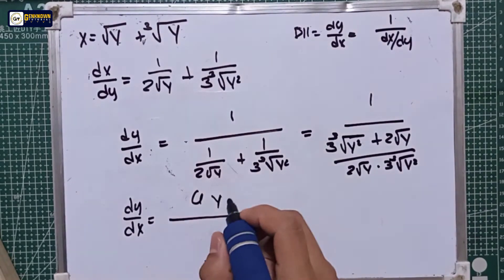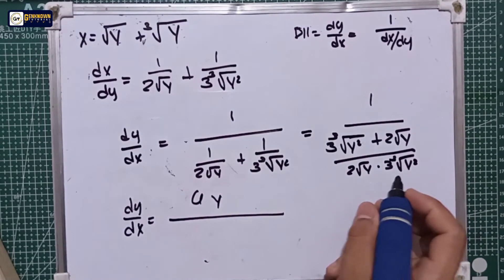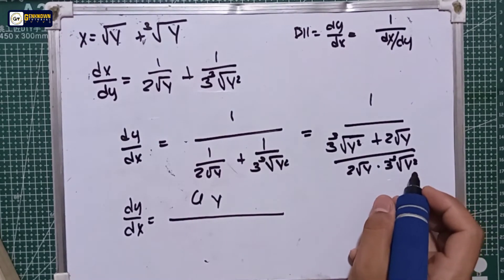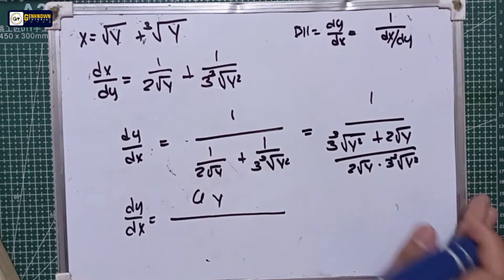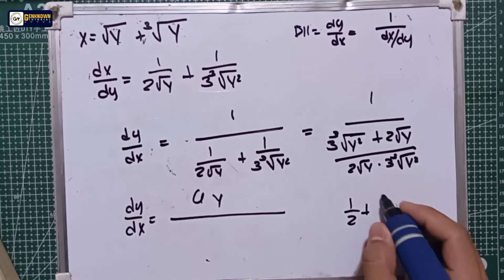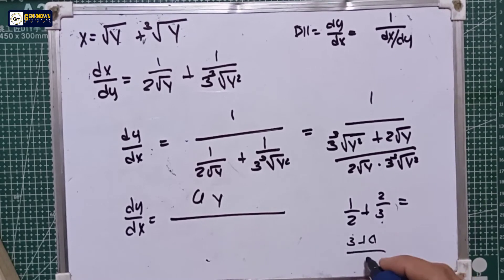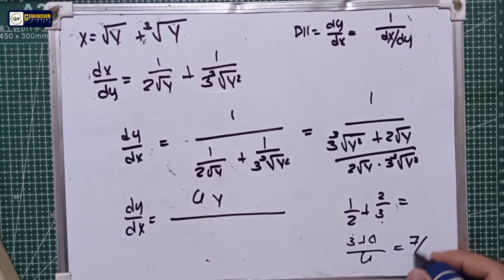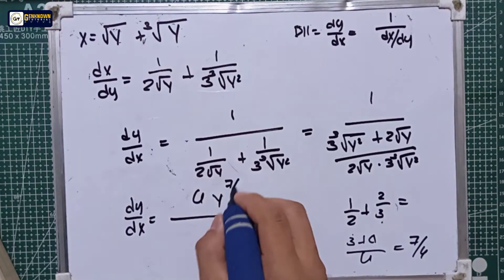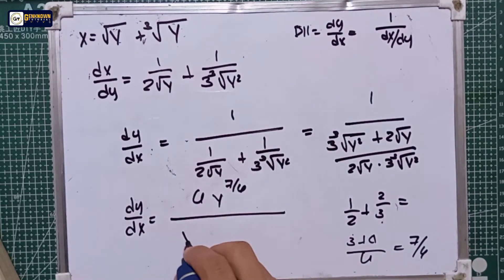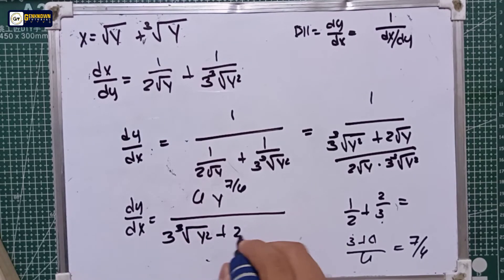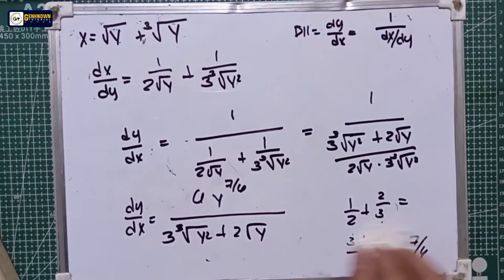Combining the exponents: y raised to 1/2 plus 2/3. Adding the fractions: 1/2 plus 2/3 equals 3/6 plus 4/6 equals 7/6. So the final answer is dy over dx equals 6y to the 7/6 all over (cube root of y squared plus 2 square root of y).